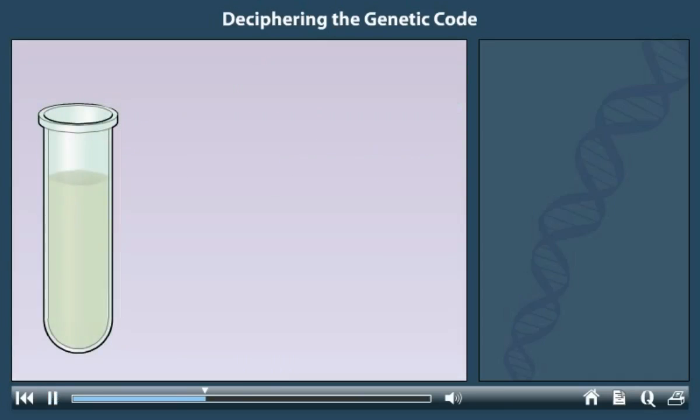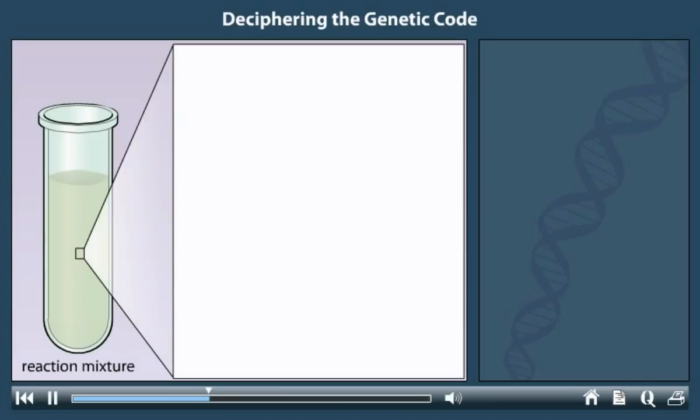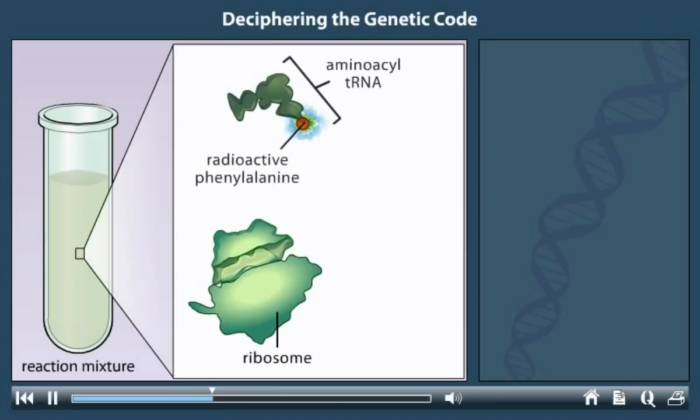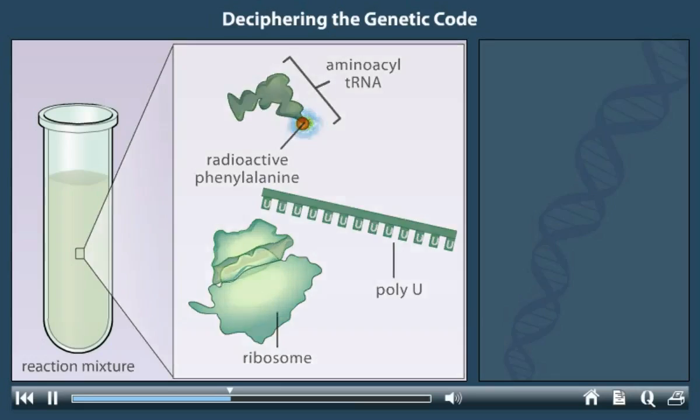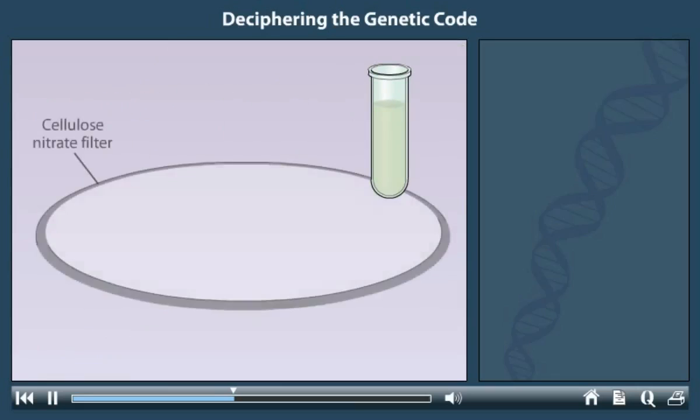To determine a codon's length, Nirenberg and colleague Philip Leder devised a clever and quick assay. The assay involved ribosomes and tRNAs charged with radioactive phenylalanine. The scientists knew that aminoacyl tRNA molecules participated in protein synthesis and under certain conditions could be found attached to ribosomes. The assay also included poly-U RNA.